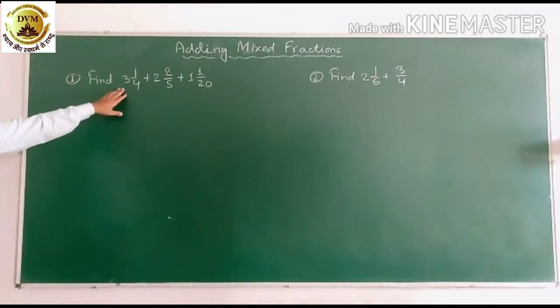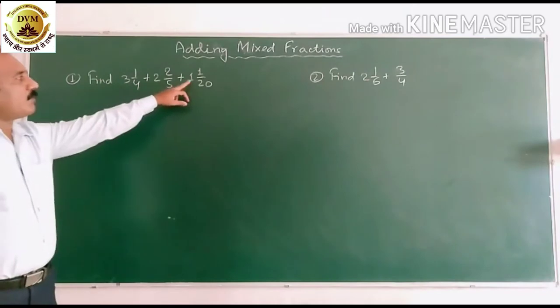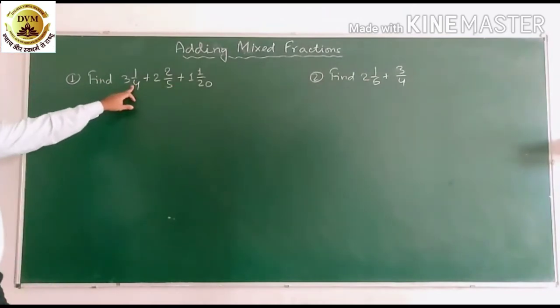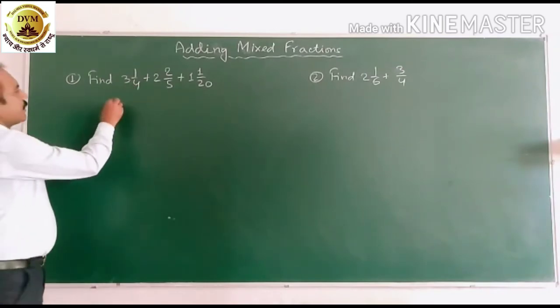Here it is written that 3 1/4 plus 2 2/5 plus 1 1/20. These all are written in mixed numbers. We have to change into common fraction. So first we change into common fraction.